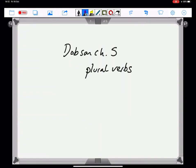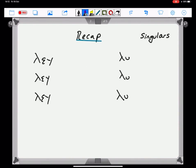Chapter 4 introduced you to the first part of the basic verb, that is, the singular forms. In Chapter 5, Dobson goes on to round this out by giving you the plural forms. To recap, you met the verb lego.